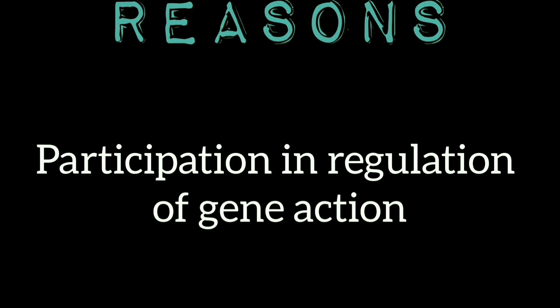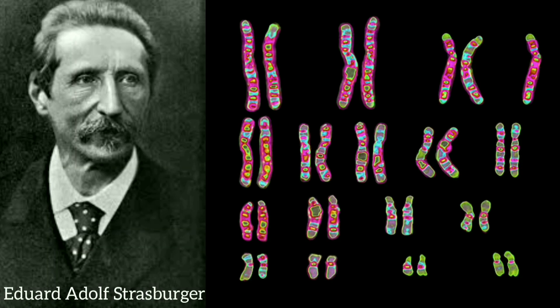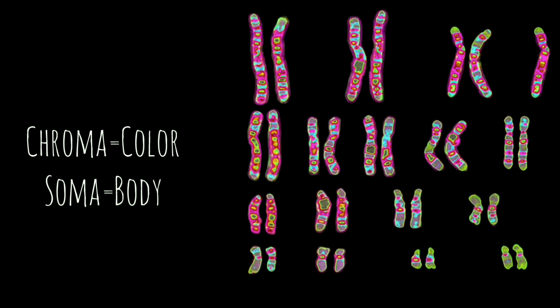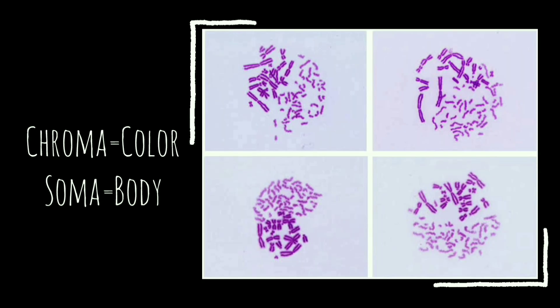As already mentioned, in 1875 Strasburger first described chromosomes while he was describing cell division in plants. Chroma means color and soma means body, so the name was given due to their marked affinity for basic dye, as a consequence of which they are stained rather deeply while the rest of the cytoplasm remained relatively unstained. Chromosomes are the rod-shaped, dark-stained bodies seen under stages of cell divisions.